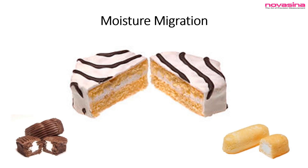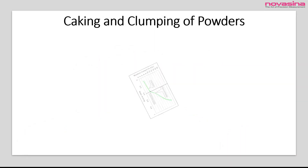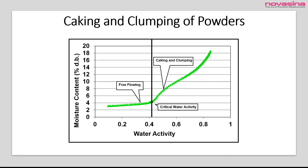Did you also know that water activity controls moisture migration in multi-component products like snack cakes with cream filling? Knowing the water activity of the cake and the filling will tell you if moisture migration will occur if they are at different water activity levels. You can also use a mathematical model in an Excel spreadsheet to predict how much moisture migration will occur and what the final water activity and moisture content of the cake and filling will be.